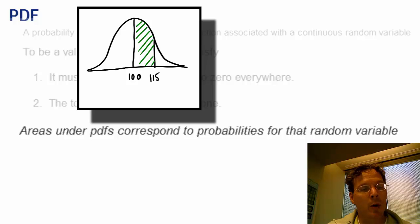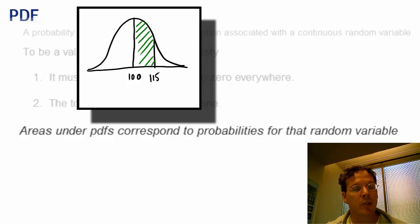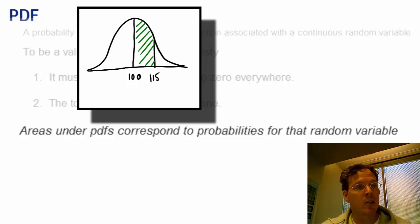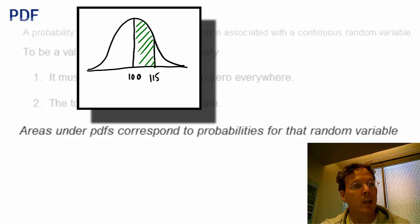Note that our probability density function is a statement about the population of intelligence quotients — it is not a statement about the data itself. We are going to use the data to evaluate that assumption and to evaluate statements about the population probability. Whenever you say the word probability, you are talking about a population quantity.